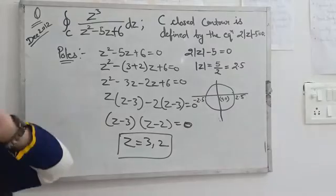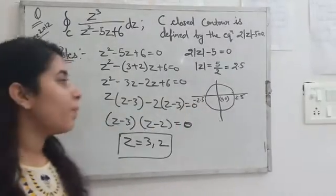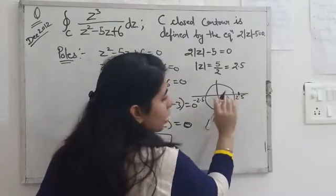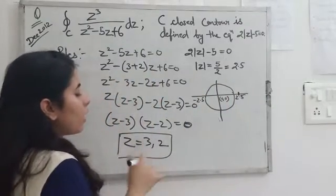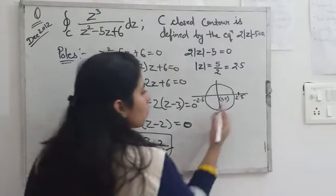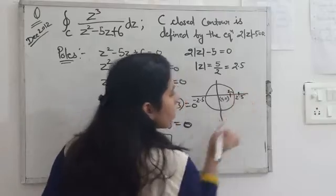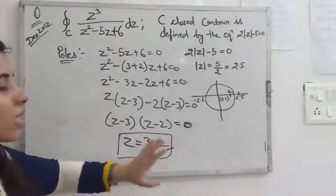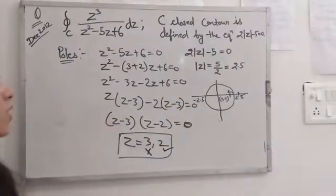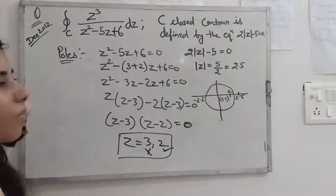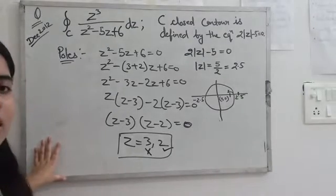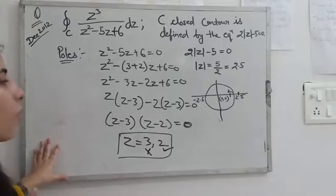Now we check which poles lie within the given region. If we look at 3, it's beyond 2.5, so 3 is outside this region. We will not consider 3 to find the residues. But if we talk about 2, it's before 2.5, so for z = 2 we will find the residue because it lies within the given contour.